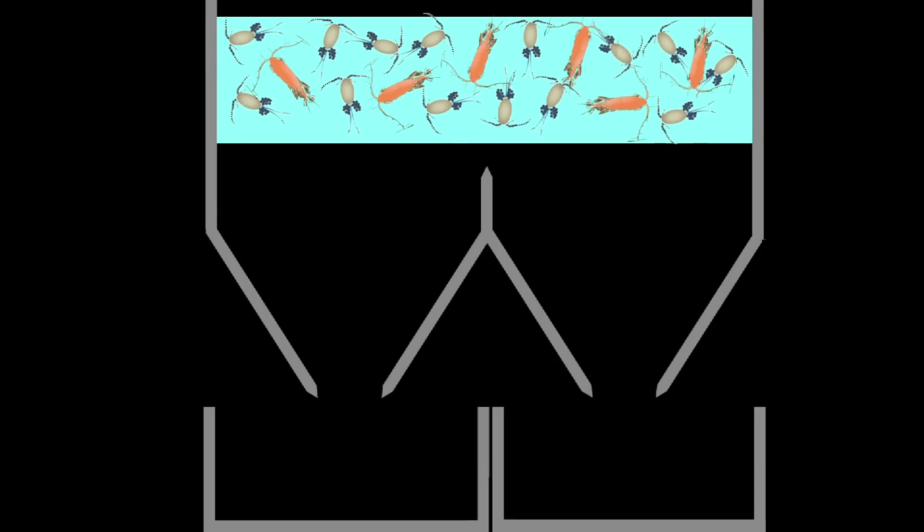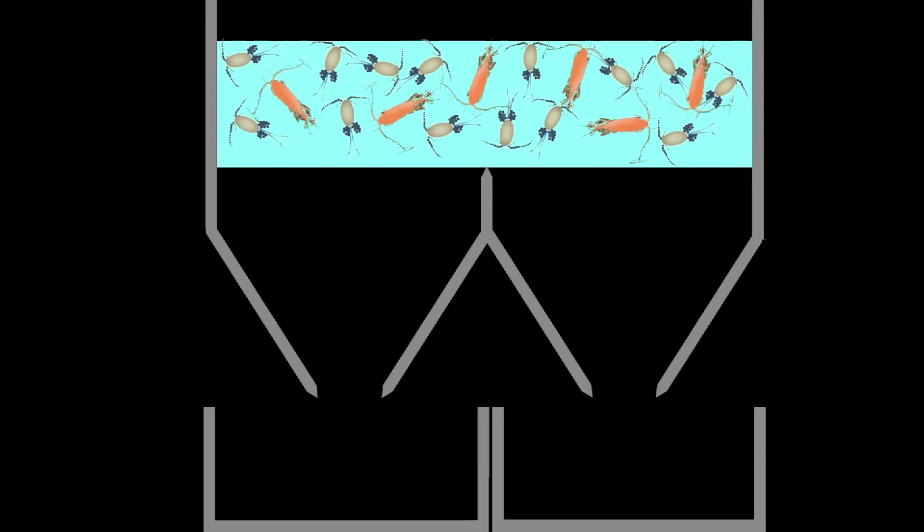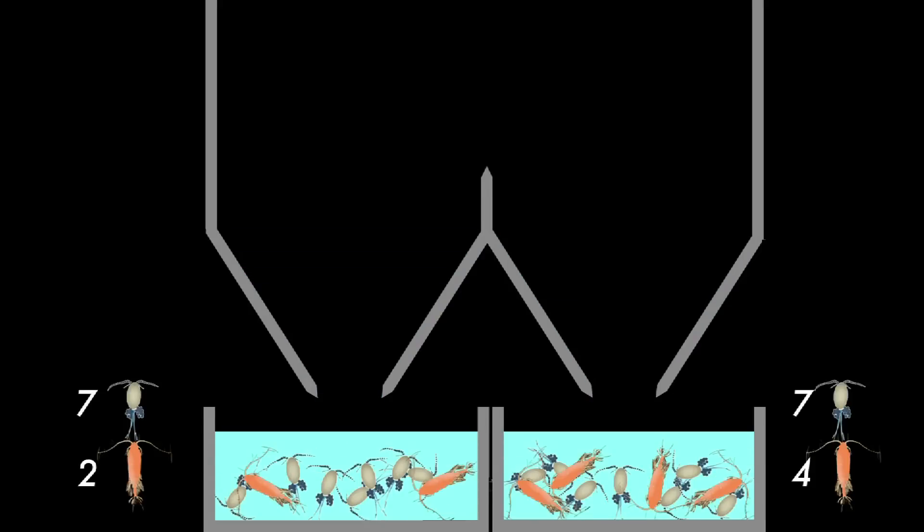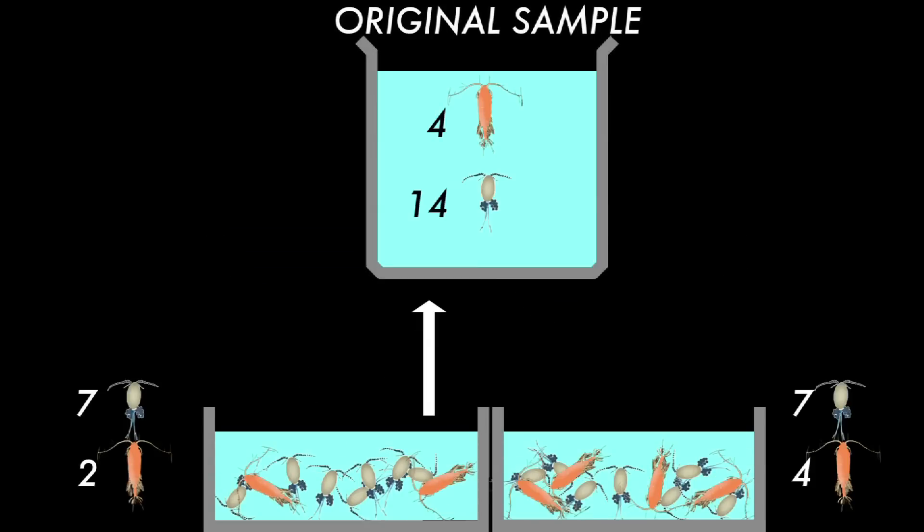If we know the fraction that has been subsampled, then the abundance of organisms in the total sample can be estimated without the need to count the entire sample.